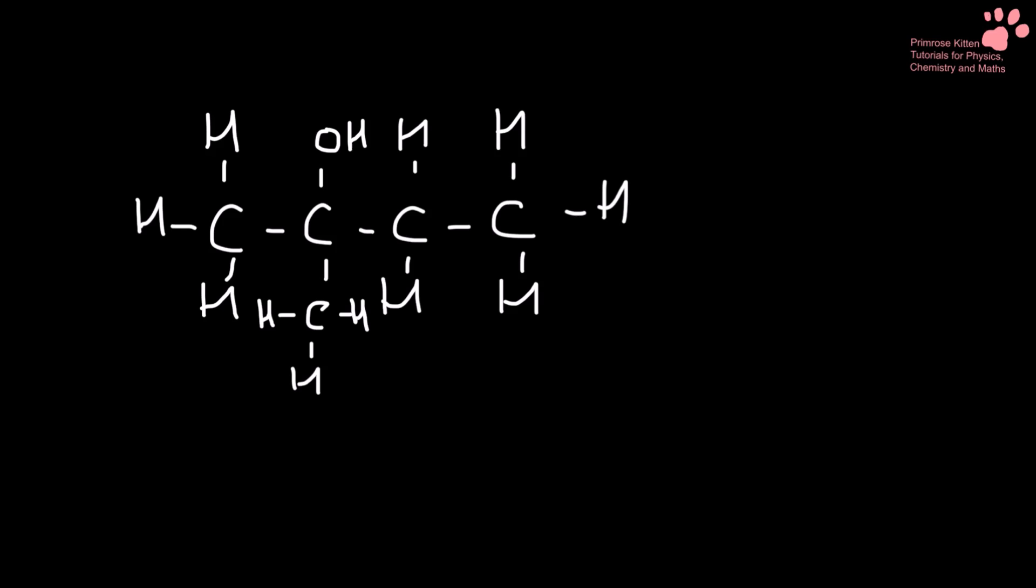Getting slightly more complicated now. Now we have another branch as well as the alcohol group. So we have our alcohol group here. We have our little branch here. Let's number our carbons. One, two, three, four. So this is butanol.